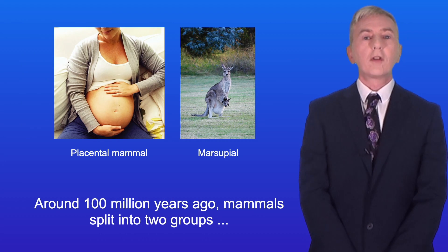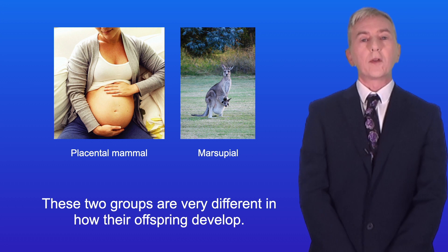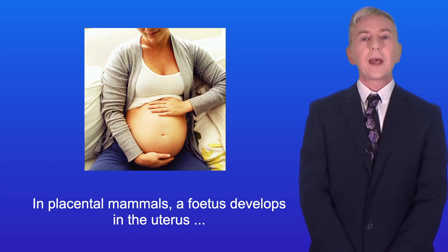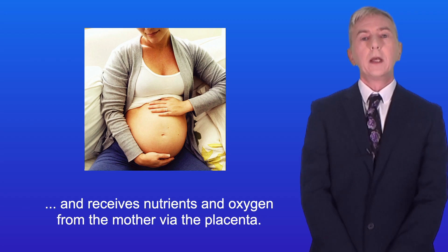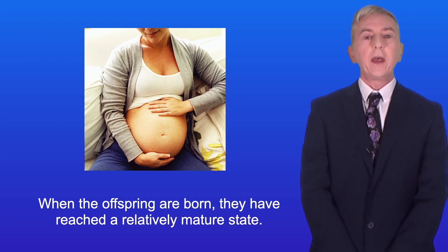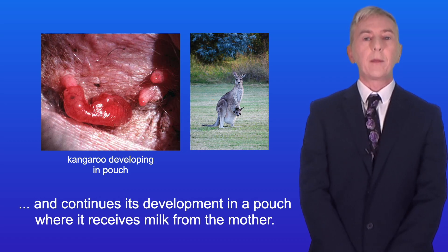Around 100 million years ago, mammals split into two groups: placental mammals and marsupials. These two groups are very different in how their offspring develop. In placental mammals, a fetus develops in the uterus and receives nutrients and oxygen from the mother via the placenta, so when the offspring are born they've reached a relatively mature state. In marsupials, a fetus leaves the uterus at a very early stage and continues its development in a pouch, where it receives milk from the mother.